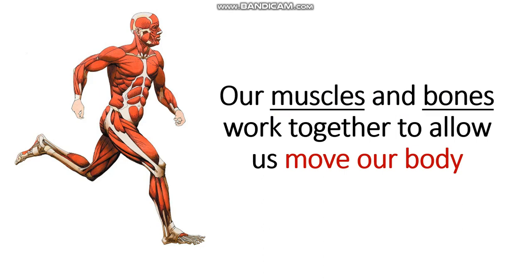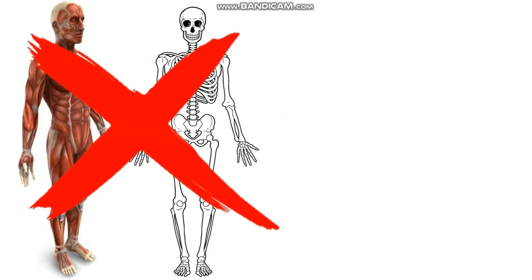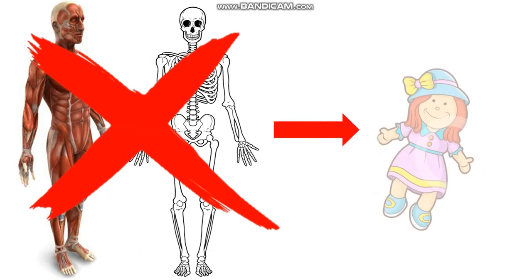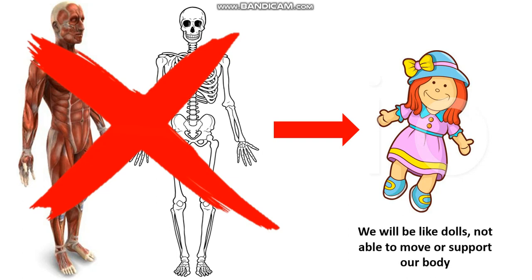We can only move with our muscular system and skeletal system working together. So what happens if we don't have these two systems? If we don't have muscles and bones, we will be like a doll or a puppet — because a puppet cannot move or support its body. So we will be like dolls, not able to move or support our body. They are very important systems in our body.